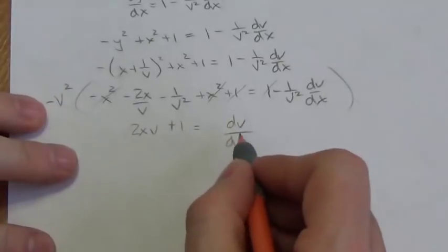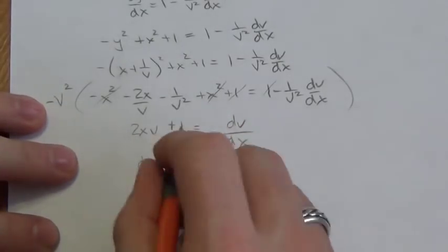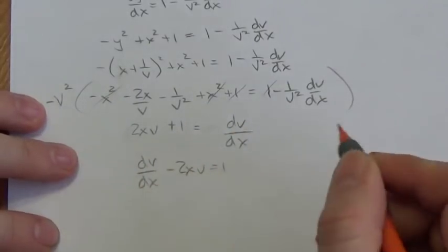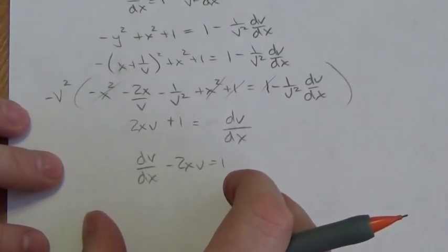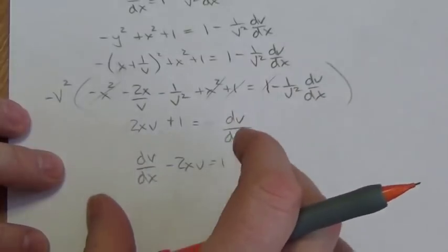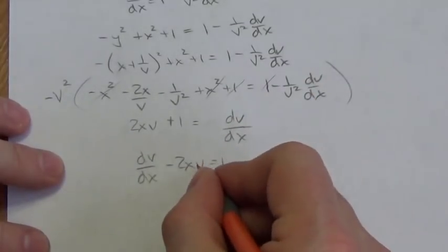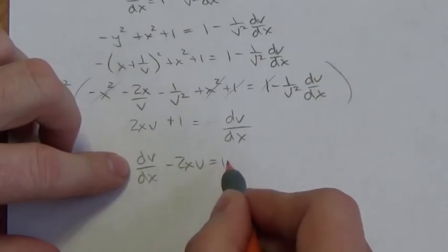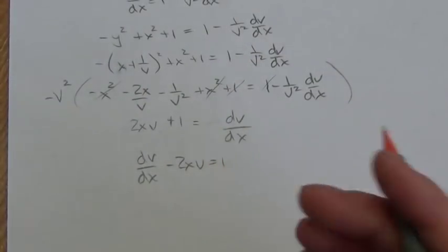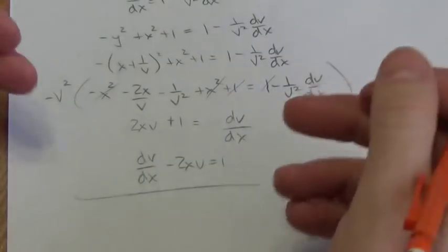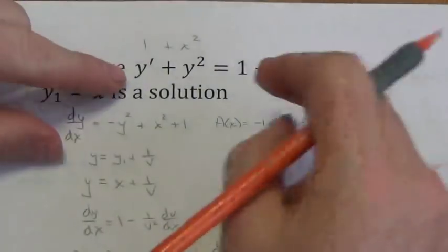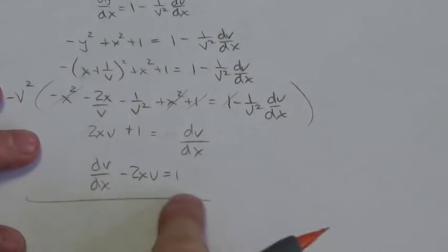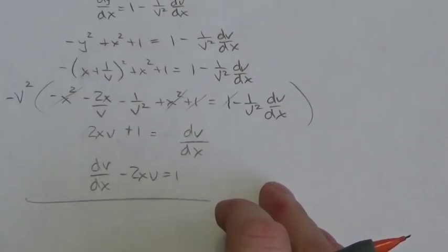Rearranging: dv/dx − 2xv = 1. This is a first-order linear differential equation in v. We've successfully reduced the first-order quadratic Riccati equation to a first-order linear differential equation, which is easier to solve.